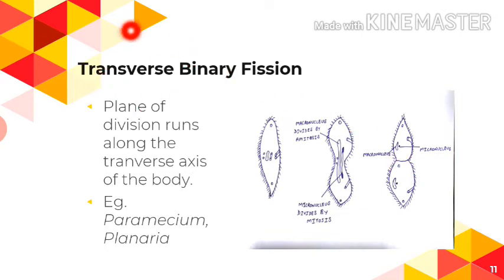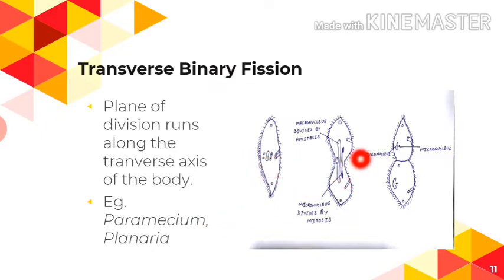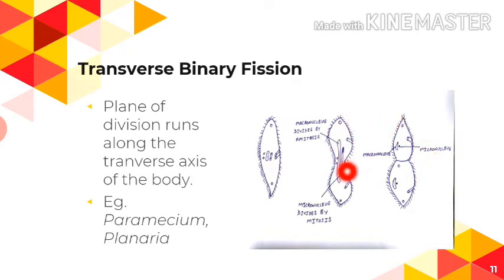In transverse binary fission, the plane of division runs along the transverse axis. The example here is Paramecium, which has one micronucleus and a macronucleus. They divide through mitosis, with one nucleus transferred to the upper daughter cell and the other to the lower one, forming two daughter Paramecium.